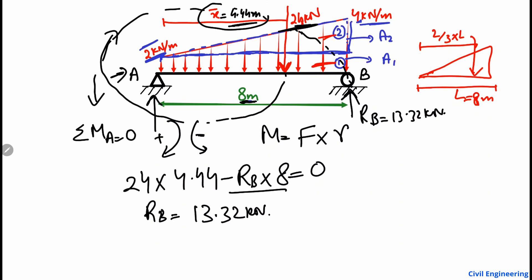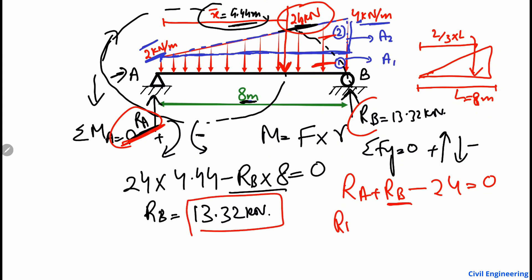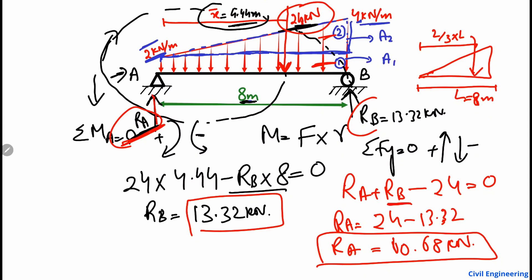To find RA, we apply the summation of vertical forces equal to zero. Upward forces are positive and downward forces are negative. So RA + RB − 24 = 0. Since RB = 13.32 kN, we get RA = 24 − 13.32 = 10.68 kN acting upward.